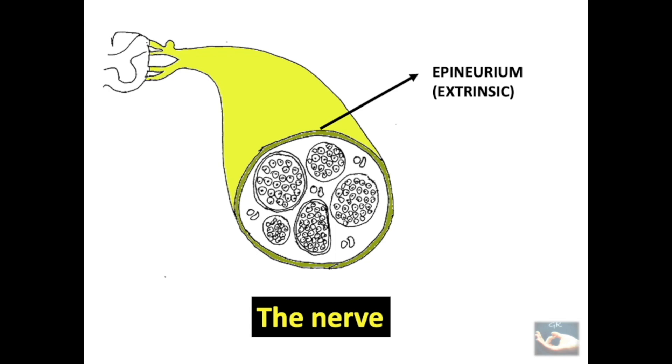The extrinsic epineurium, which is a thickened structure completely covering the nerve and the intrinsic epineurium, which consists of the fibers or the tissue of the epineurium that surrounds the fascicles in the nerve.